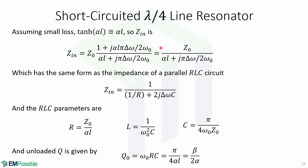Notice that this input impedance has the same form as the impedance of a parallel RLC circuit. The RLC parameters for this resonator are: resistance R equals z0 over alpha*L, inductance L equals 1 over omega-0 squared times C, and C equals pi over 4*omega-0*z0. The unloaded Q is given by Q-0 equals omega-0*R*C, which equals pi over 4*alpha*L, also equal to beta over 2*alpha.